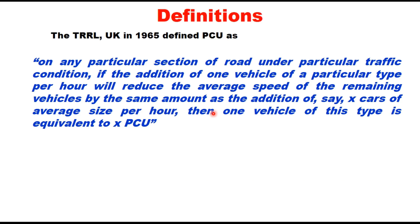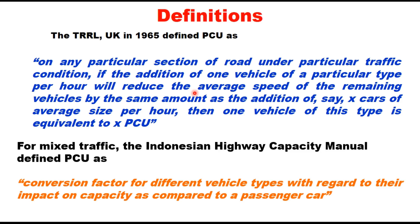Another definition was given by DRRL in 1965: on any particular section of road under prevailing traffic conditions, if the addition of one vehicle of a particular type per hour reduces the average speed of the remaining vehicles by the same amount as the addition of x cars of average size per hour, then one vehicle of that type is equivalent to x PCU. Speed was thus taken as the criterion. The Indonesian Highway Capacity Manual defined PCU as a conversion factor for different vehicle types with regard to their impact on capacity compared to a passenger car, making capacity the measure of effectiveness.